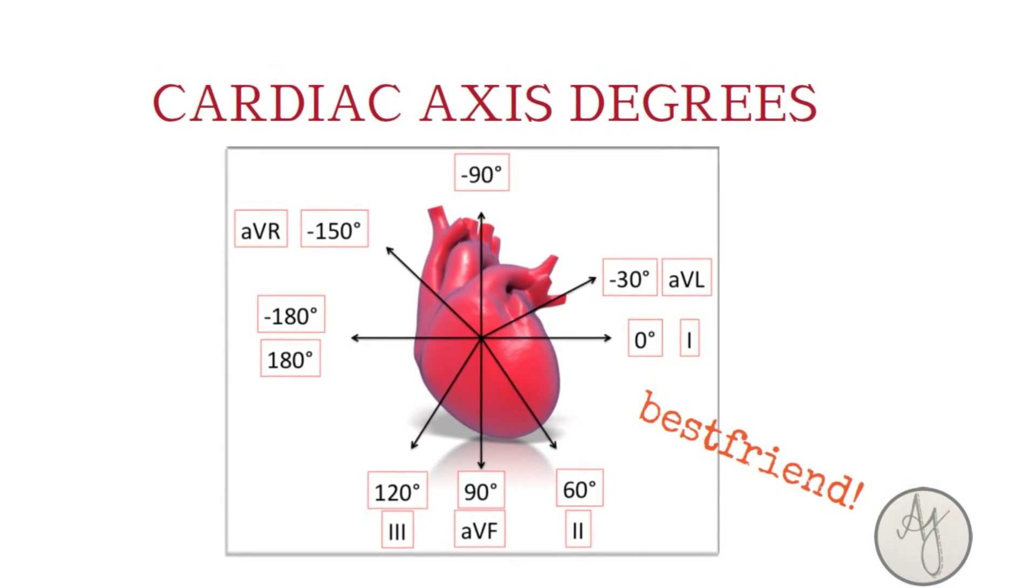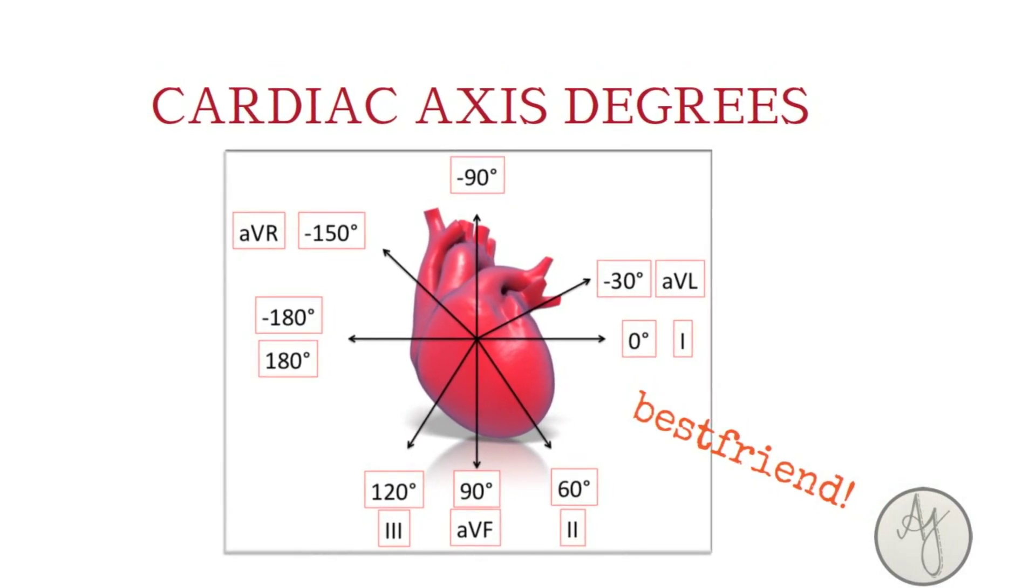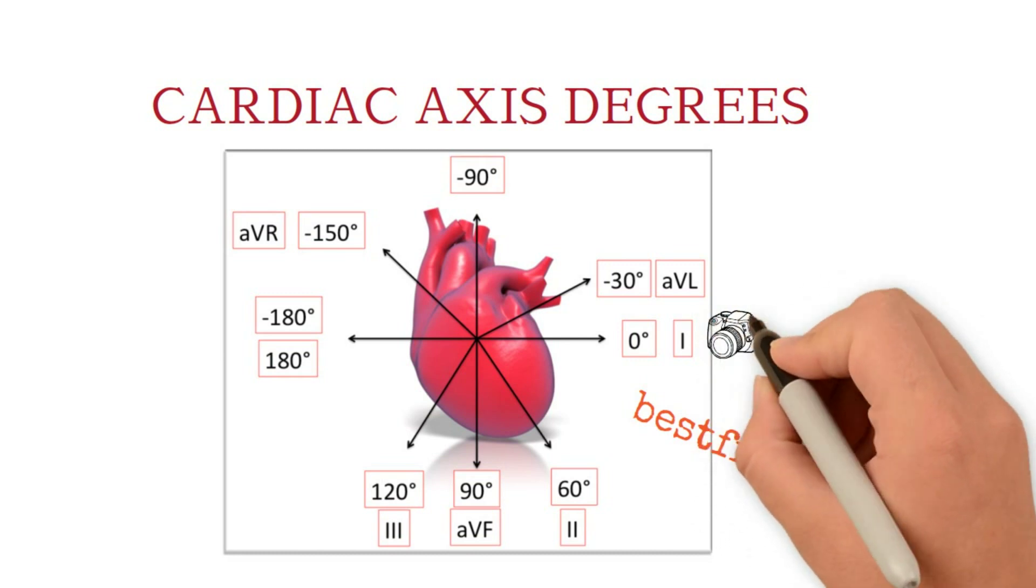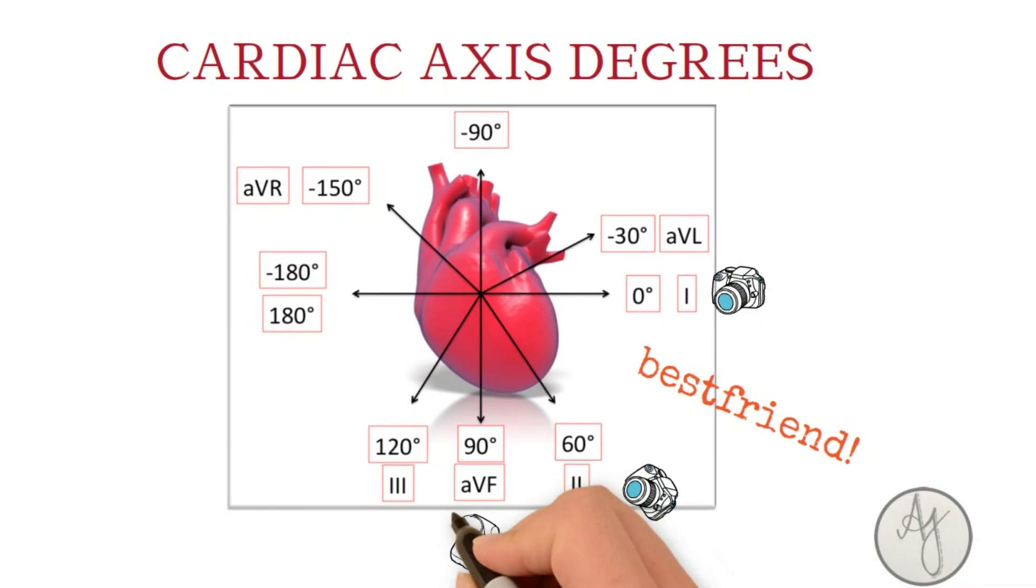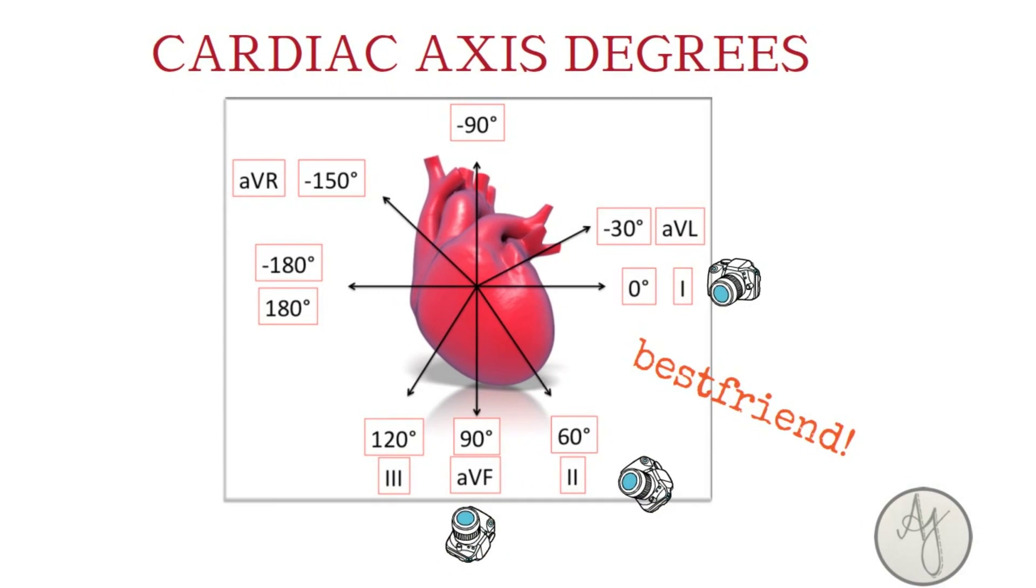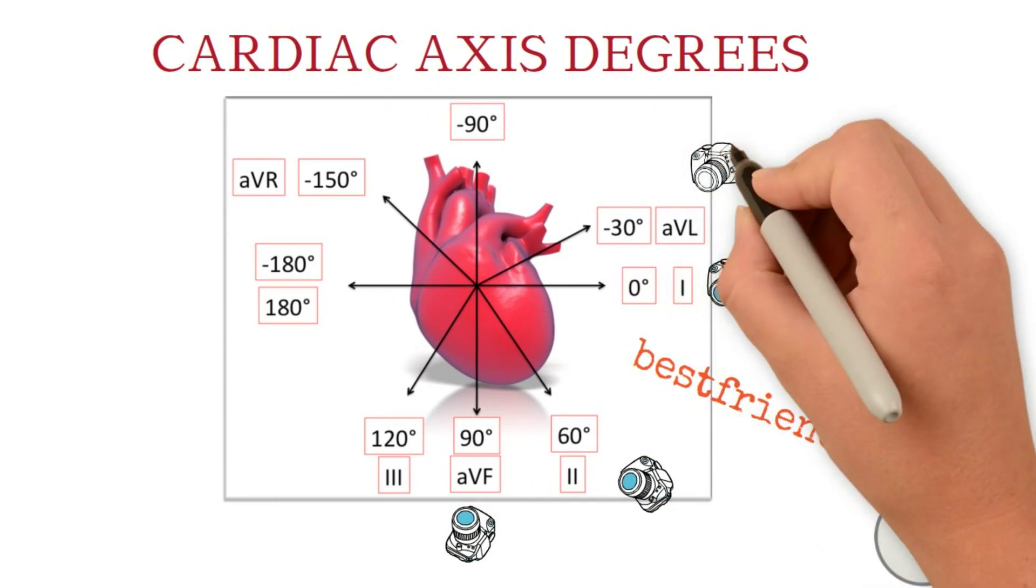Lead one is looking at your heart from a zero degree, lead two from a plus 60 degree, lead aVF from a plus 90 degree, leads aVL and aVR looking at it from minus 30 and minus 150 degrees.